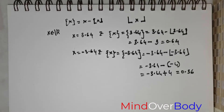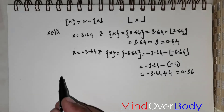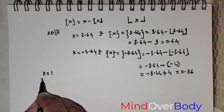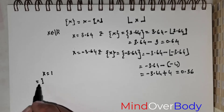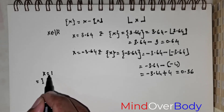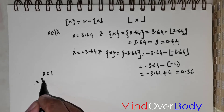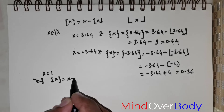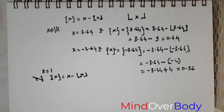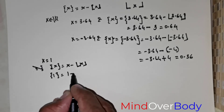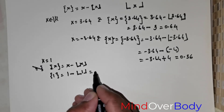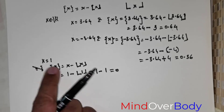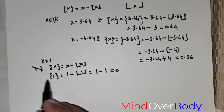That is a very important observation to keep in mind. Now let us find the fractional part when x is equal to 1. The formula is: fractional part of x equals x minus floor of x. So the fractional part of 1 is 1 minus floor of 1, and the floor of 1 is 1. So 1 minus 1 equals 0. The fractional part of 1 is 0 — that is a very important understanding to have.